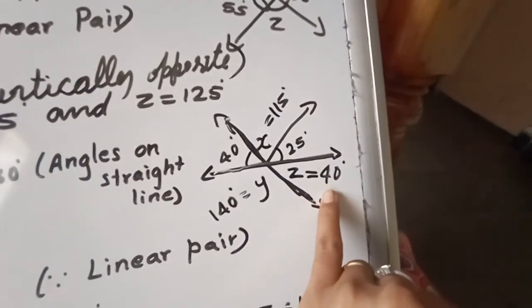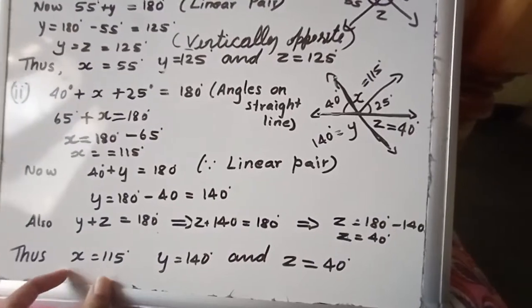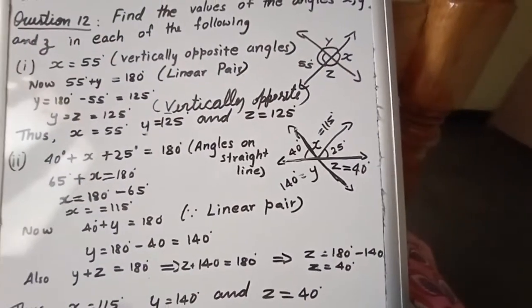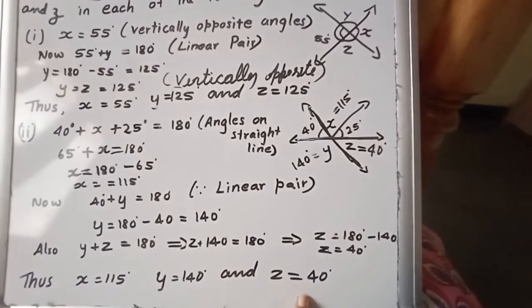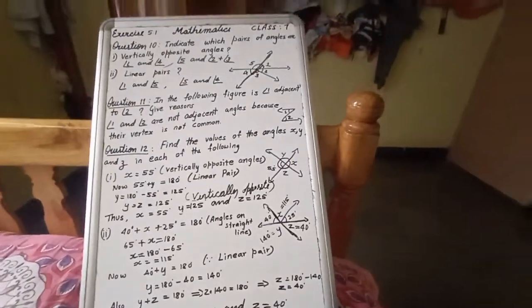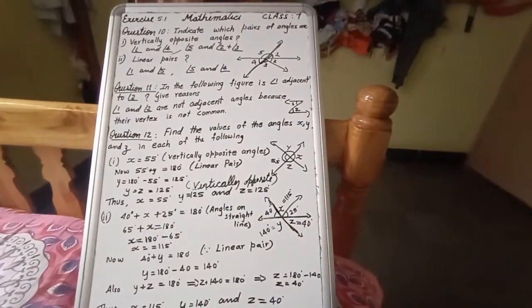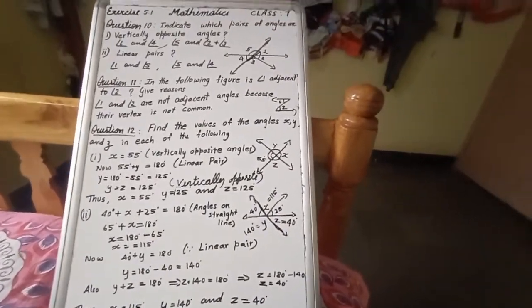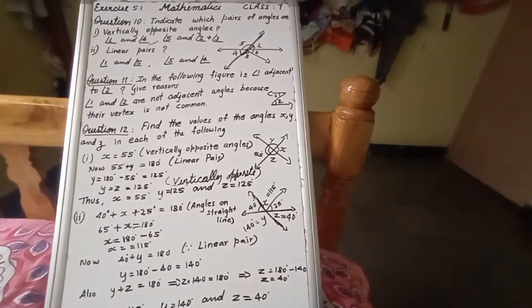Here already we have done without steps, but you have to show the steps. Now thus X is equal to 115, Y is equal to 140, Z is equal to 40. Hope you understood these two, question number 10, 11, 12. If you have any doubts you can put it in the comment box. Thank you my dear students.